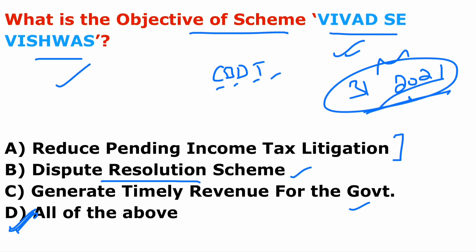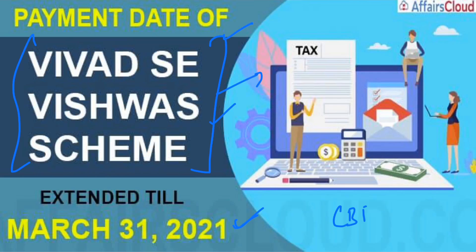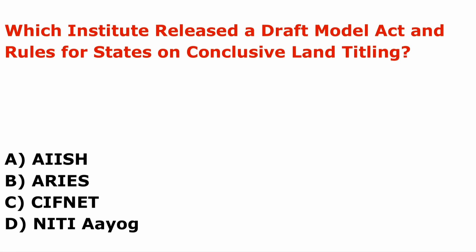The payment date of the Vivad se Vishwas scheme is extended to 31st March 2021. It lies under the Central Board of Direct Taxes. The current chairman of CBDT is PC Modi — also known as Pramod Chandra Modi. The headquarter is in New Delhi.